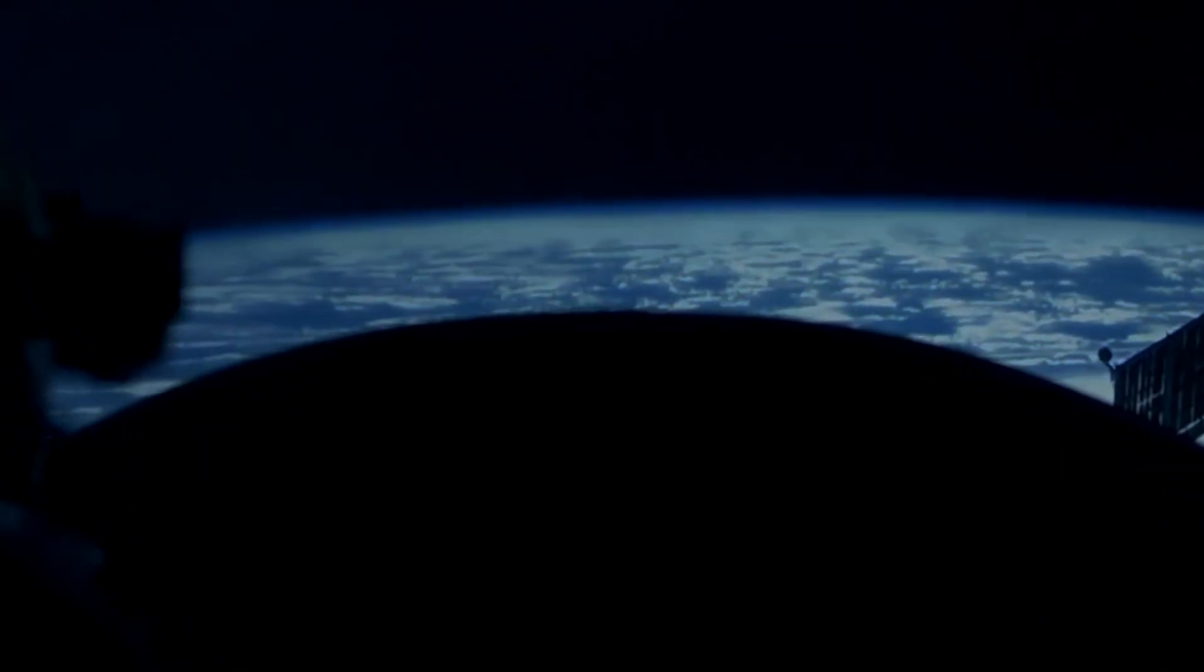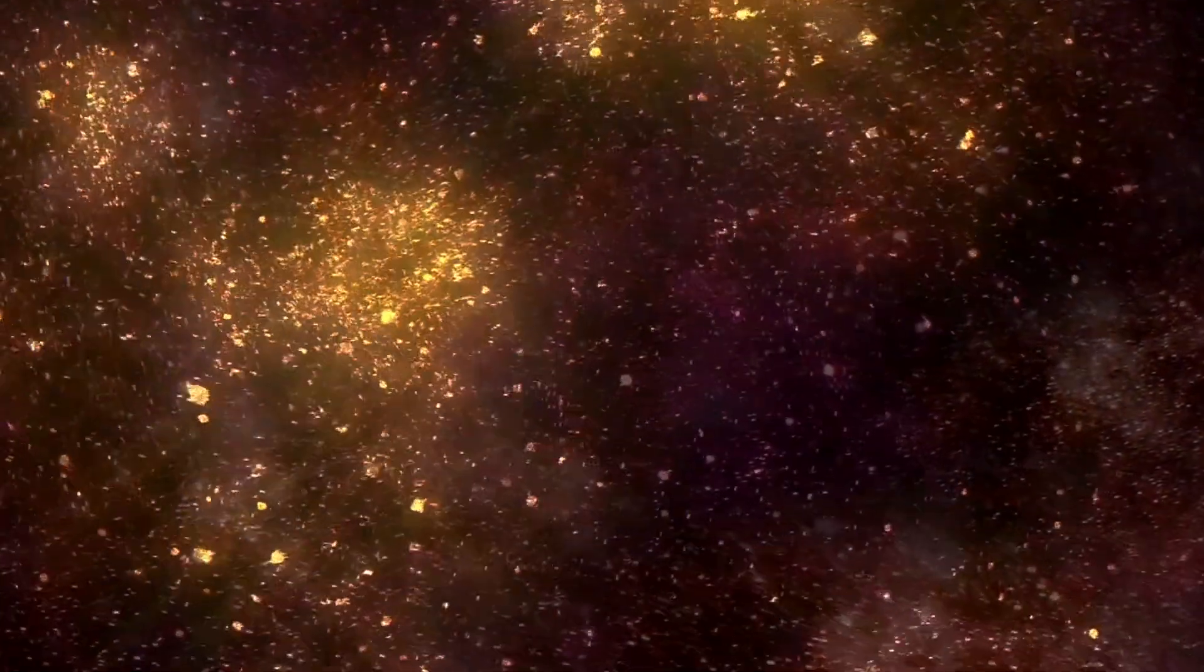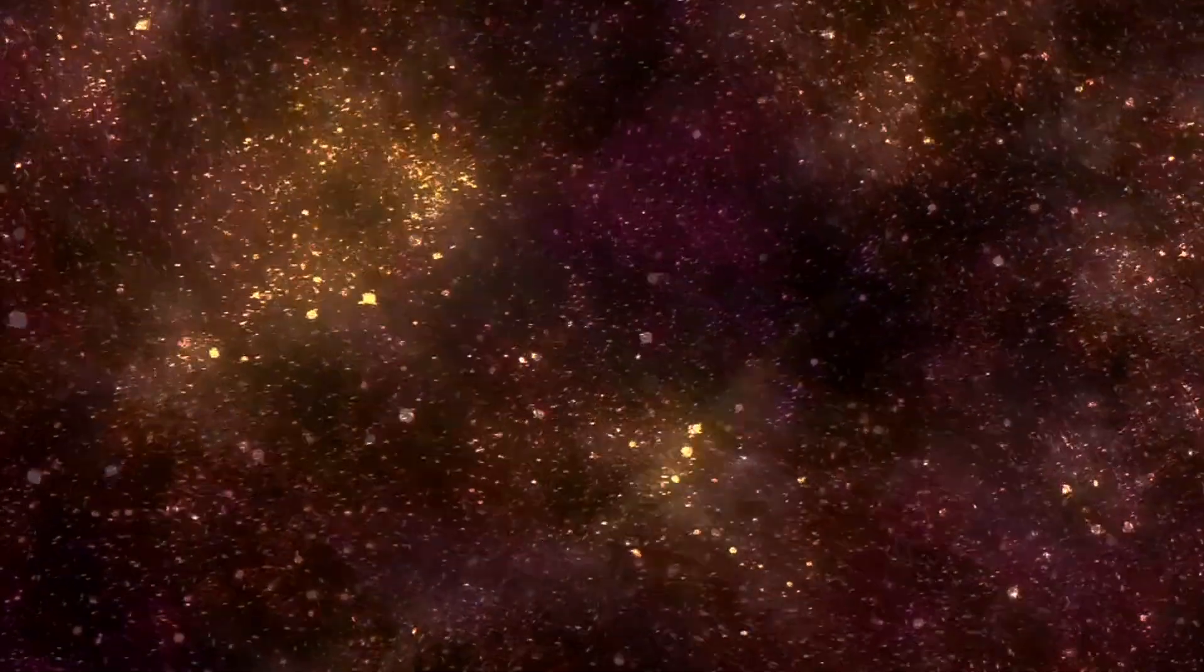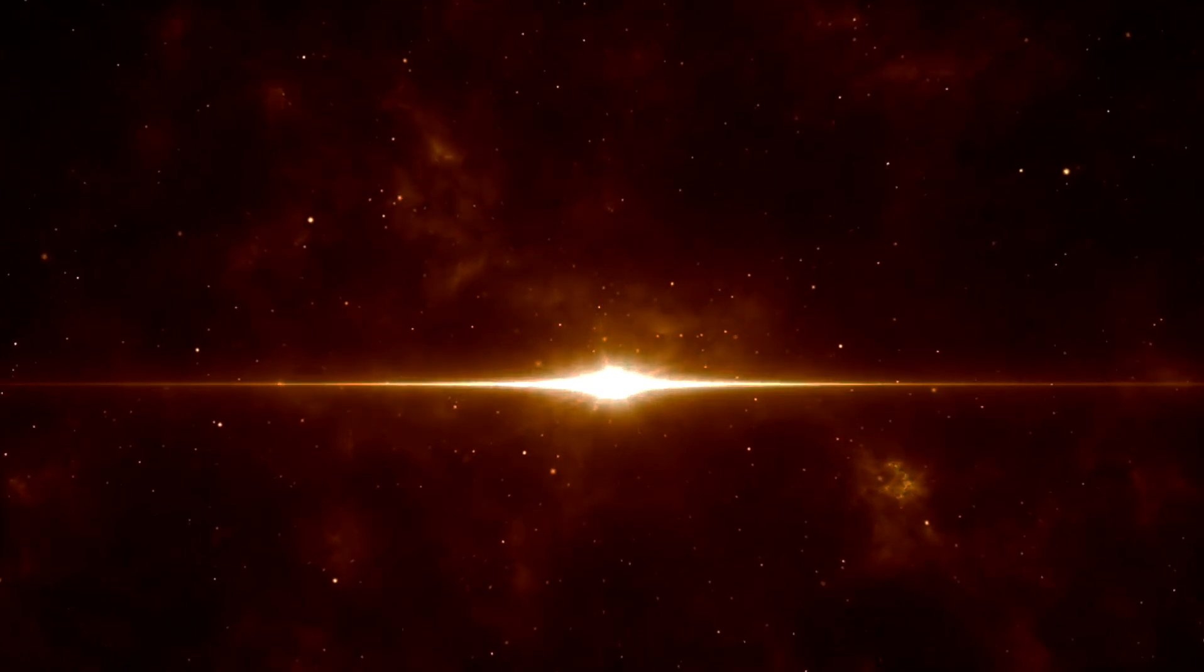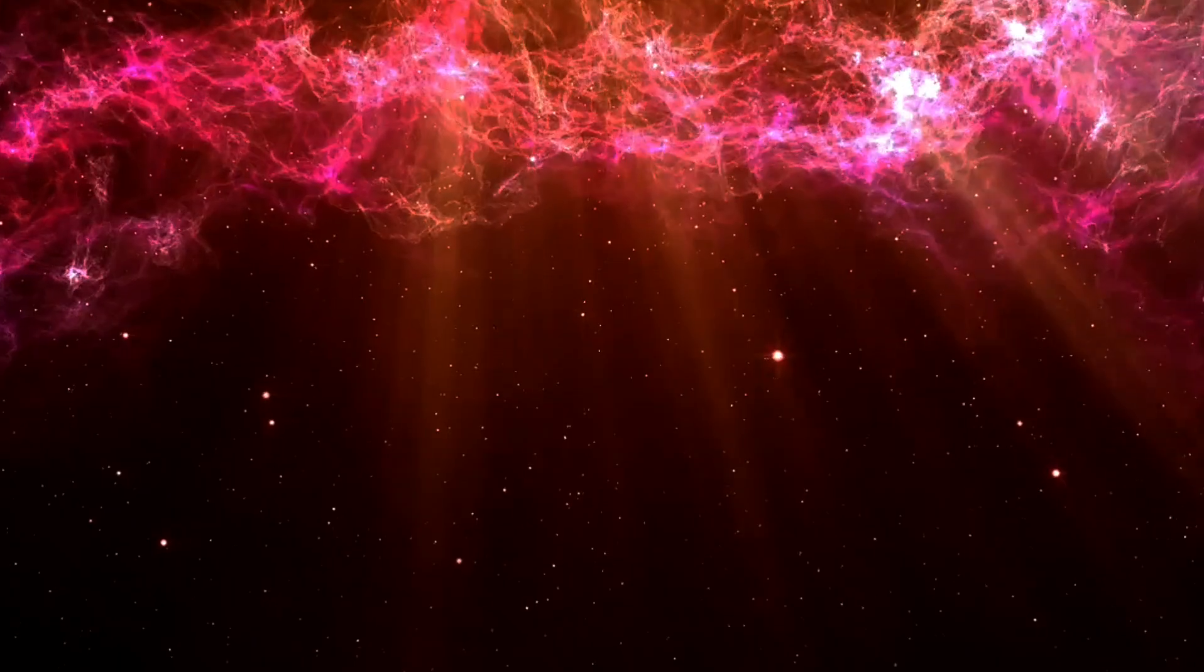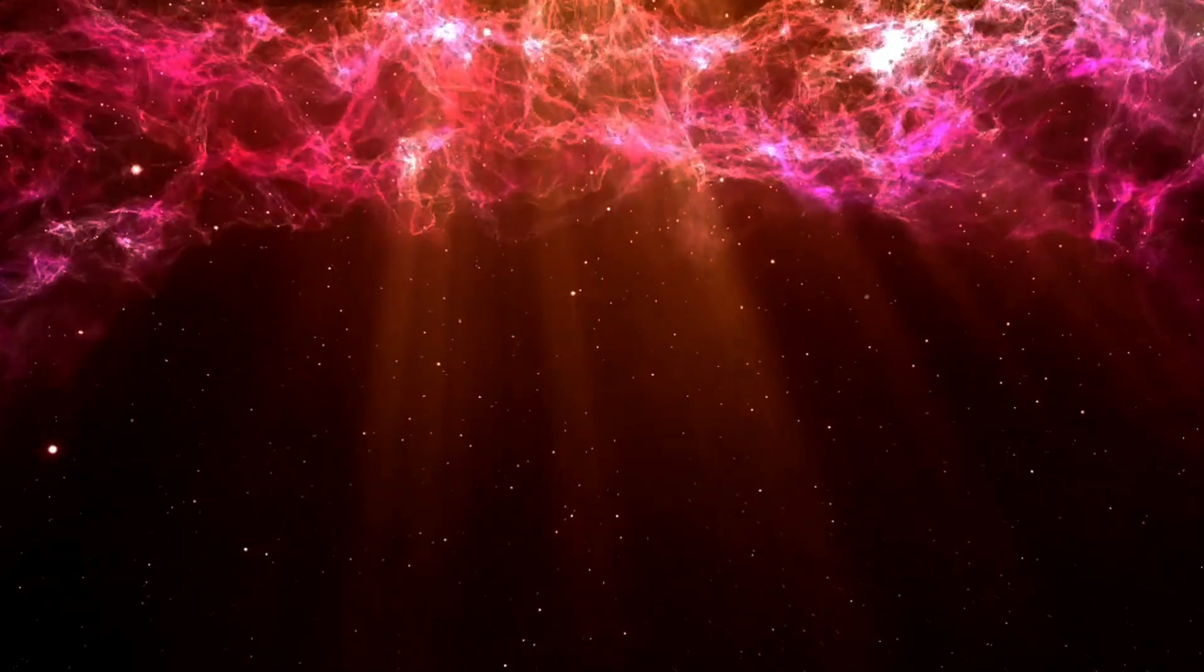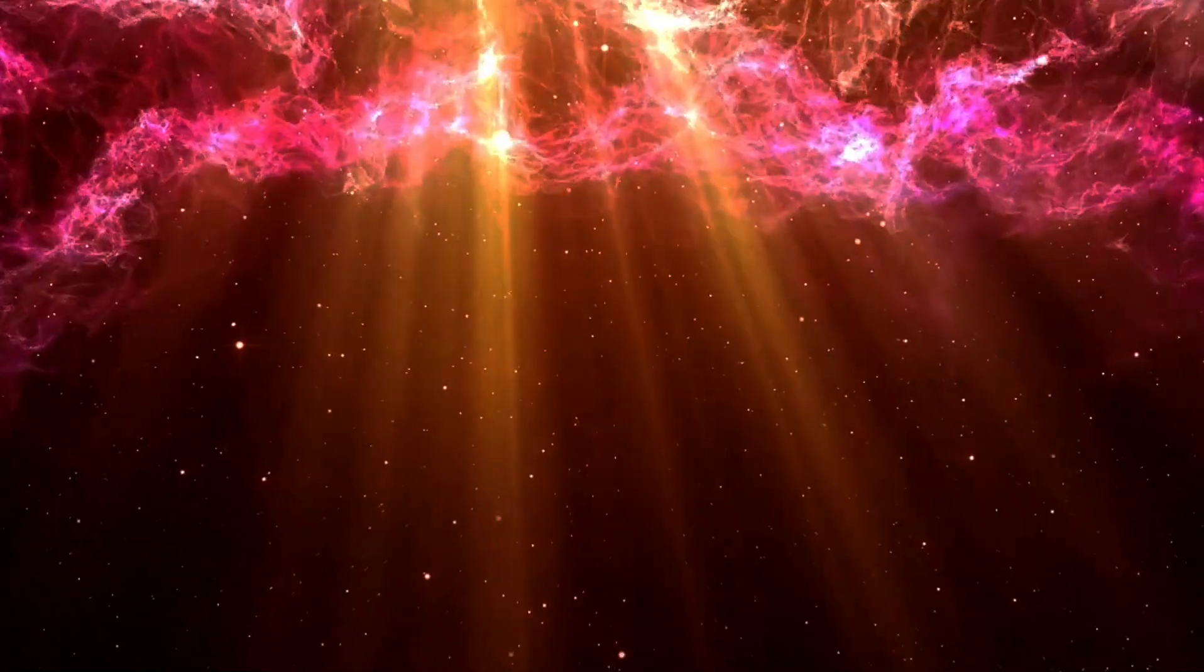Redshift is not only a stand-in for a galaxy's distance from us, but because of how long it takes for light to reach us, a stand-in for how far back in the past we are looking when we observe that galaxy. If we look as far back as possible, back to the most redshifted light we can see, all we see is a bright, almost uniform glow, the cosmic microwave background, and that is the earliest, most distant light we can see.